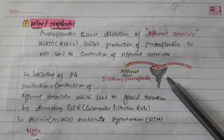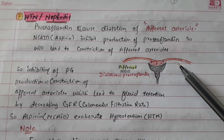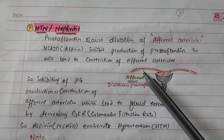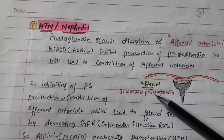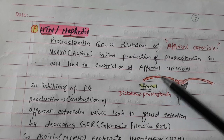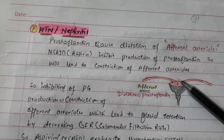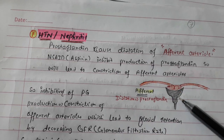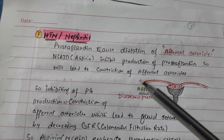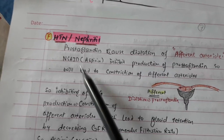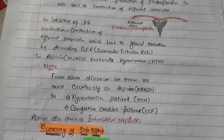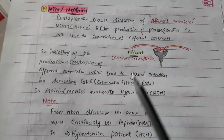Regarding hypertension and nephritis: for dilation of the afferent arteriole, prostaglandin is needed, but aspirin inhibits prostaglandin synthesis. So the afferent arteriole cannot dilate — it constricts, less blood enters the Bowman's capsule, and glomerular filtration rate decreases. Fluid is retained in the body, leading to hypertension.